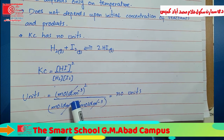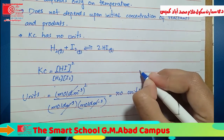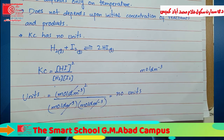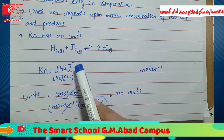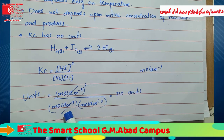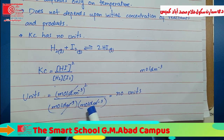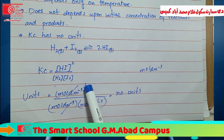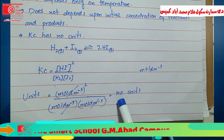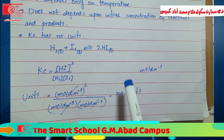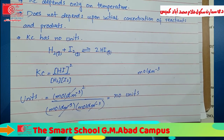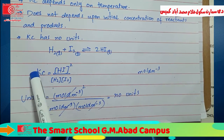The concentration unit is mol/dm³. We substitute: [HI]² in the numerator, and [H₂][I₂] in the denominator. When we cancel the units, the mol/dm³ squared terms in the numerator and denominator cancel each other out. When the sum of powers of products equals the sum of powers of reactants, there will be no units for Kc.